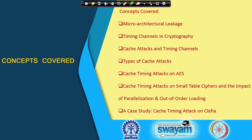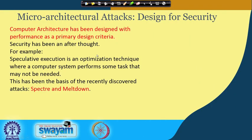We intend to also discuss cache timing attacks on small table ciphers and their impact of techniques like parallelization and out-of-order loading. Finally, we shall wrap up with a case study on a cipher called CLEFIA — basically a cache timing attack on CLEFIA, which is a standard block cipher. First, let us have a quick look at the effect of micro-architectures on security.